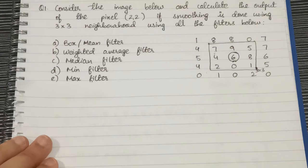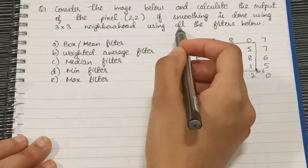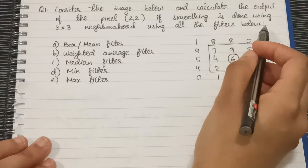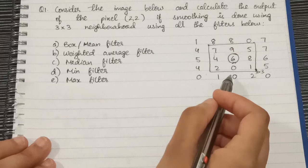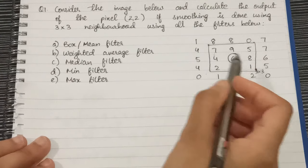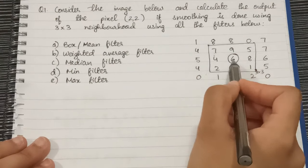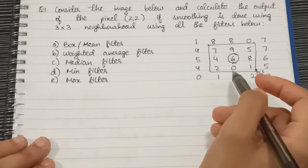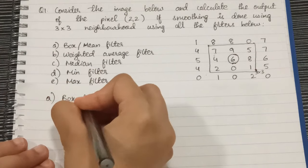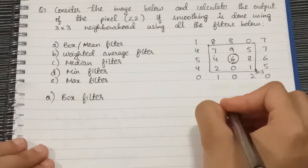Now let's look at our question. Consider the image below and calculate the output of the pixel (2,2). Smoothing is done using 3 by 3 neighborhood using all of the filters below. We have this input image here and we have this (2,2) pixel value. Since it's given 3 by 3 neighborhood, we'll only consider this 3 by 3 area around the center pixel. Let's get started. The first one is box filter.